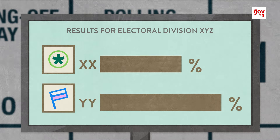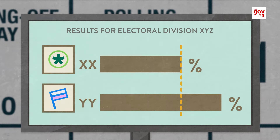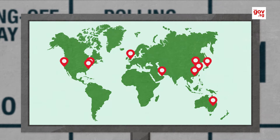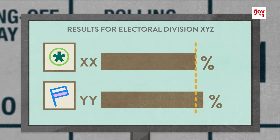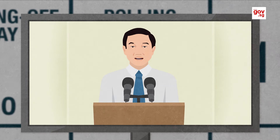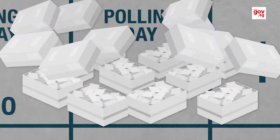If overseas votes do not impact the outcome of the election, the RO will declare the candidate or group of candidates with the greatest number of votes to have been elected. If overseas votes have an impact on the outcome, the RO declares the candidate or group of candidates with the highest number of current votes, and the final declaration is deferred until the day the overseas votes are counted.